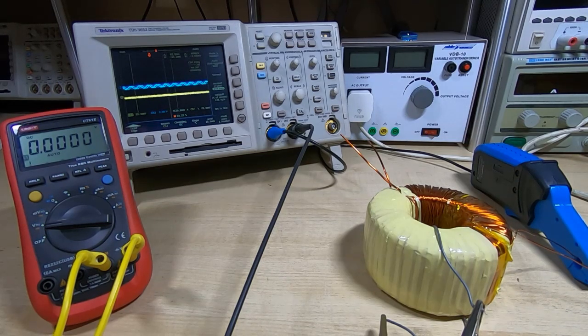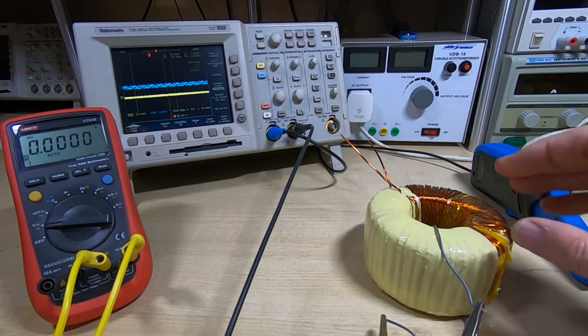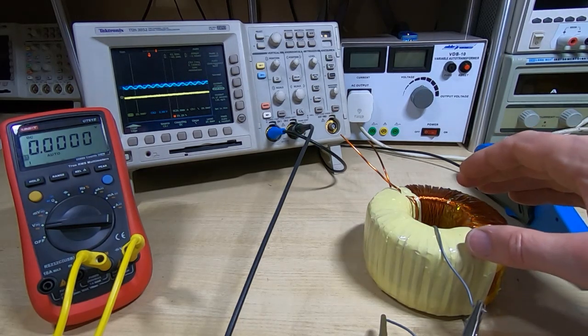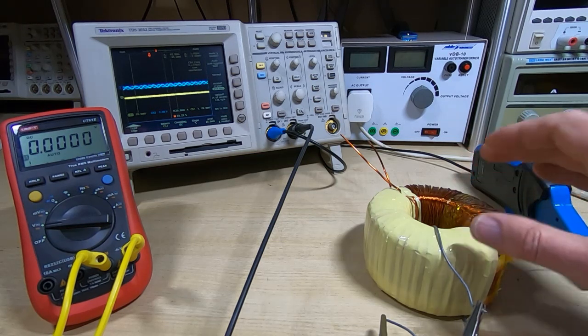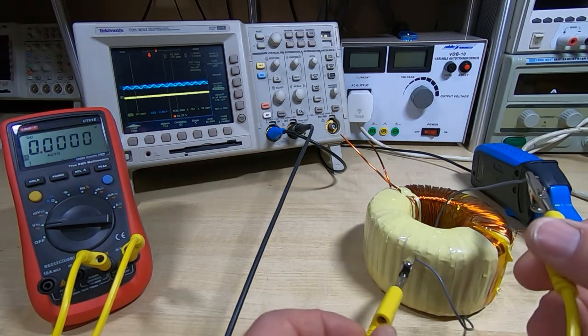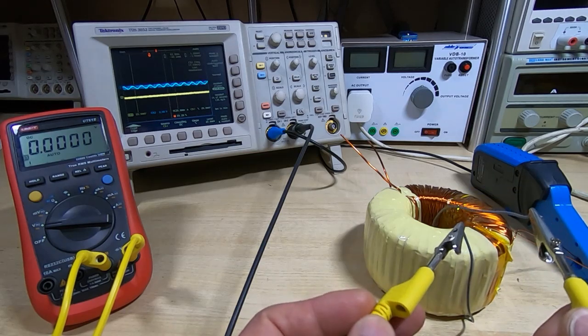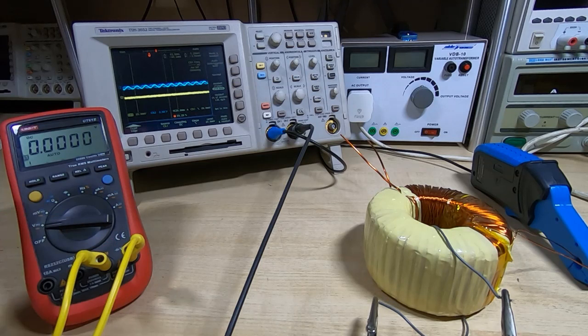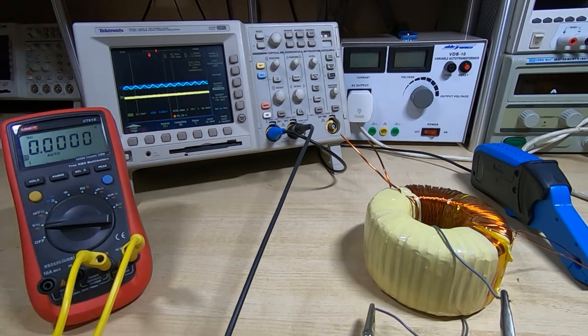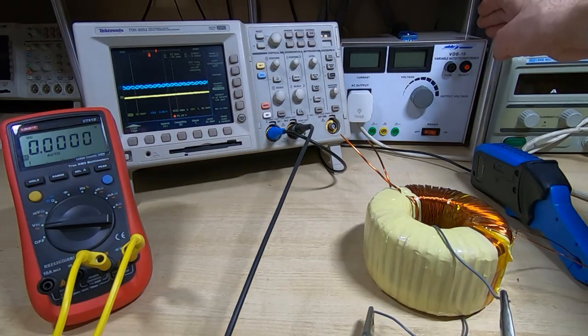If you're fairly certain it's a power transformer and you can identify which are the secondaries and which are the primaries, then you can do some very rough and ready testing. We'll determine the number of turns on the primary winding. The easiest way is to put a single extra turn around the core.